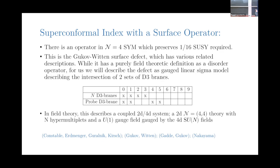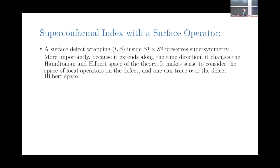The probe D3-brane intersects along the thermal direction as well as a spatial cycle, so that the intersection of these two branes describes the surface, and then the probe sticks out along certain directions in the bulk. From the field theory point of view, there are now new open strings that stretch between the large stack of D3-branes and the new probe that we introduced. In string theory, there are new open string degrees of freedom, which means in the field theory limit there are new matter degrees of freedom that live at this interface. In field theory, we're now describing a coupled 2D-4D system — specifically a two-dimensional N=(4,4) supersymmetric theory.